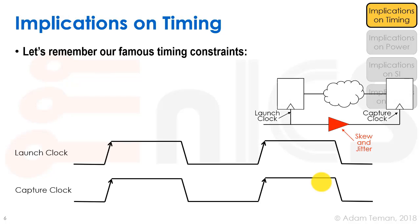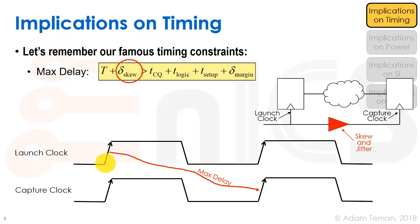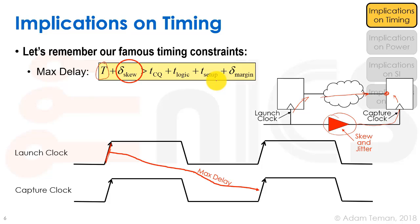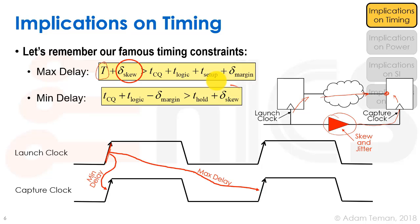Starting with timing: we have our famous timing constraints. For the max delay constraint, we have the launch clock at the first flip-flop going through TCQ plus T-logic, and the arrival time at the endpoint must be shorter than the clock period T plus any skew, minus setup time. Our min delay equation ensures we don't skip a clock cycle — TCQ plus T-logic must be longer than the delta skew plus the hold time constraint.